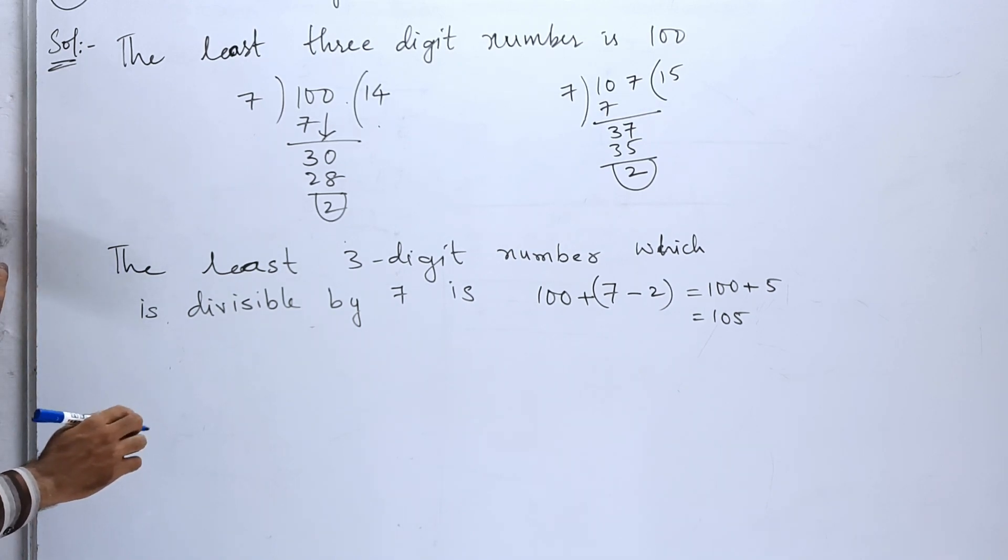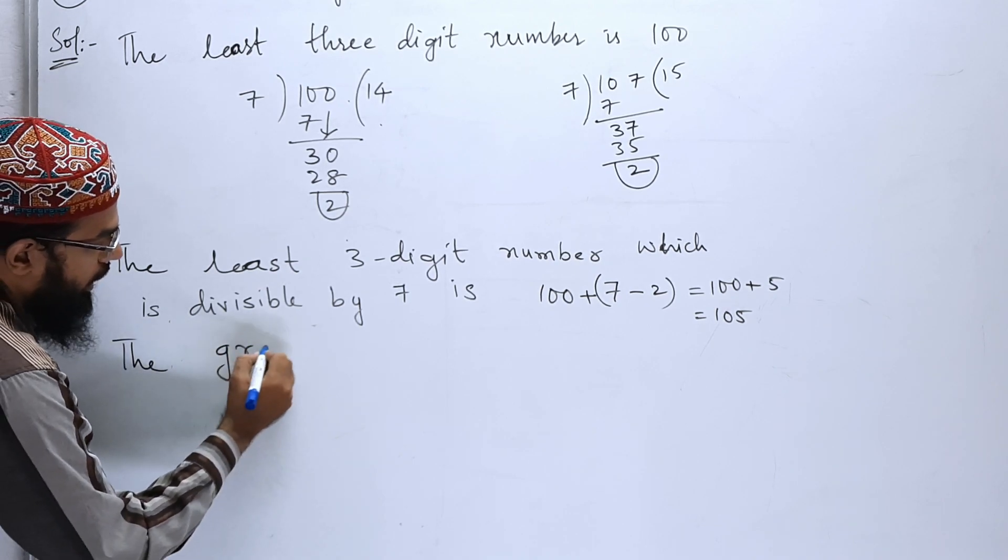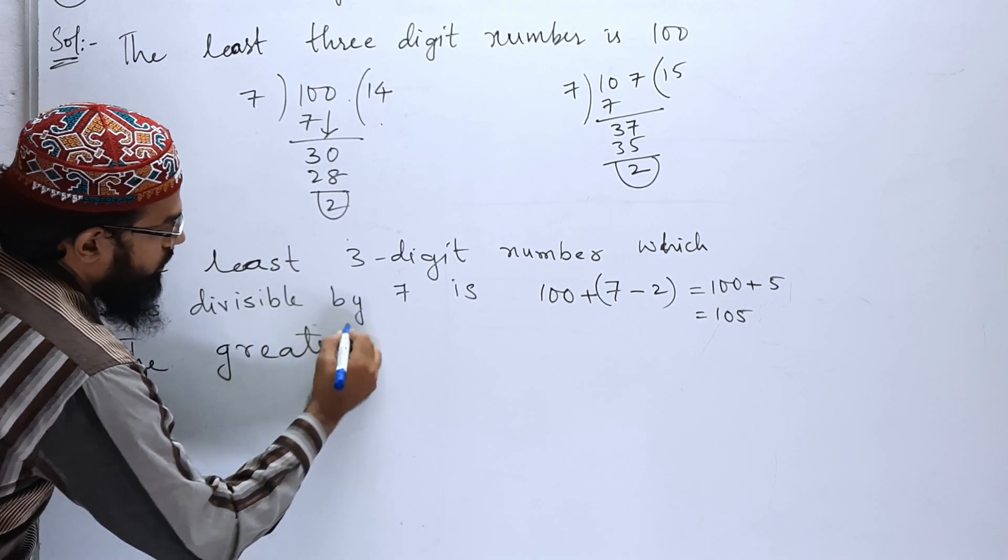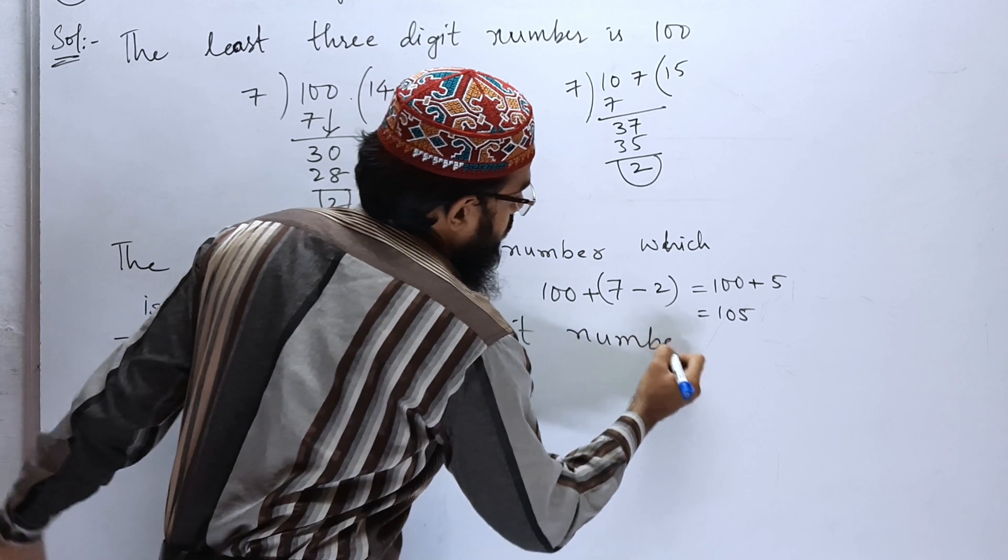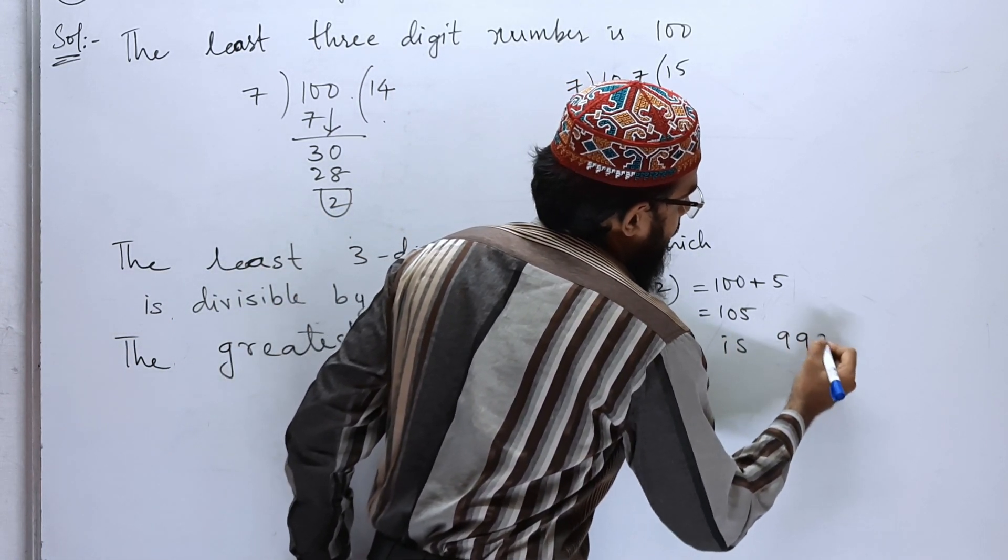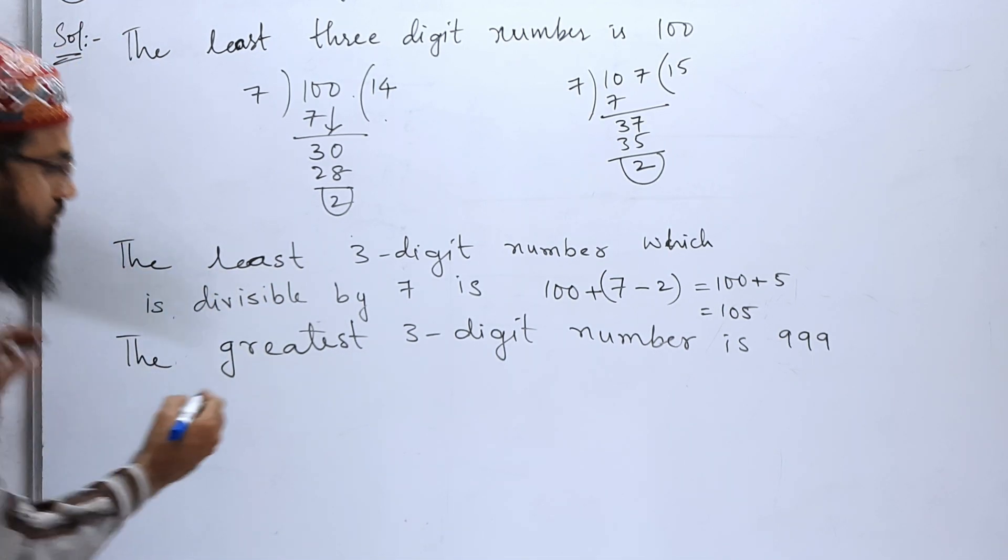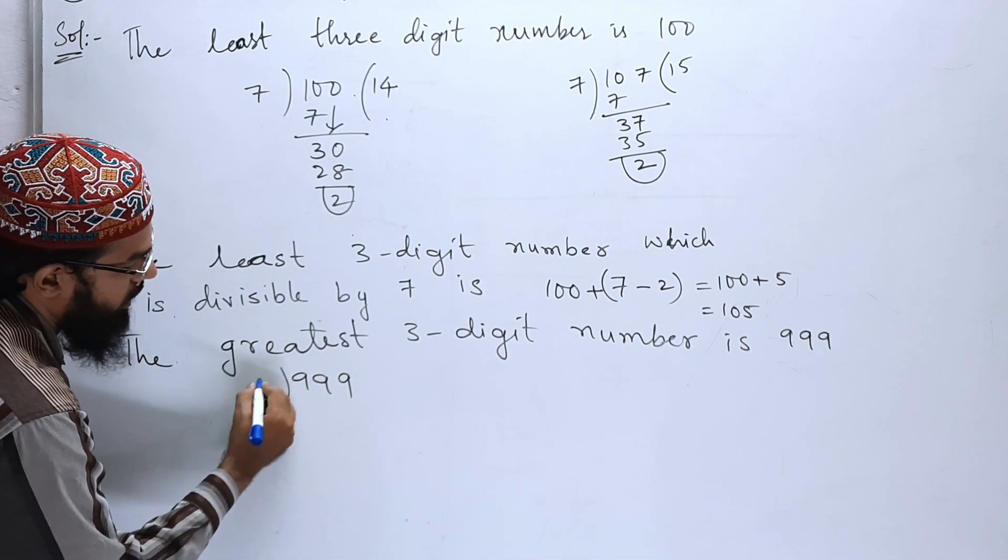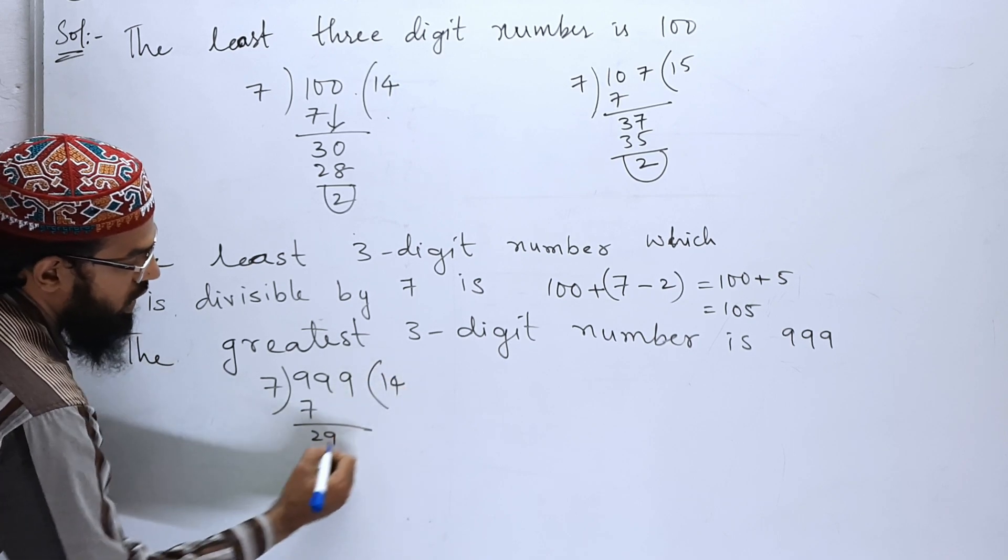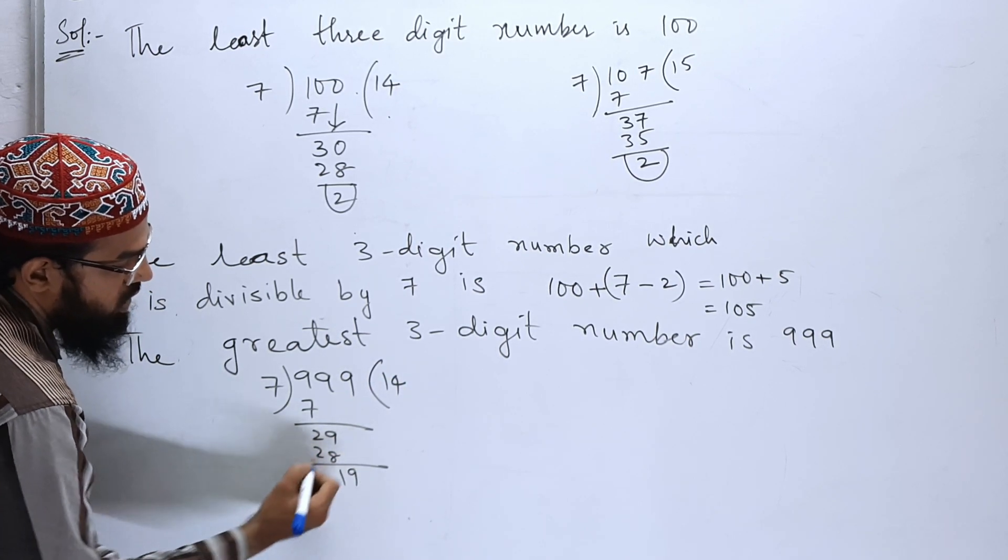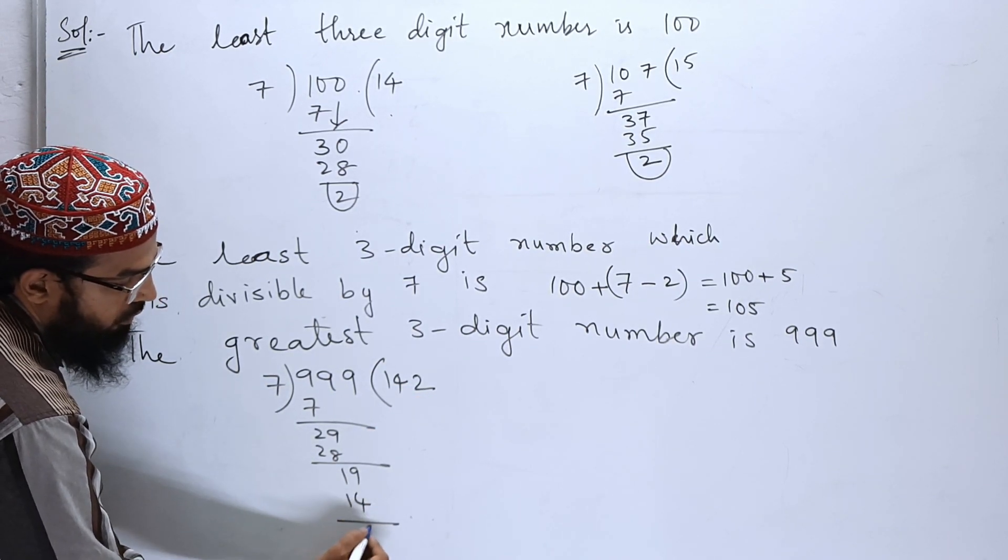Next, let us see for the greatest 3-digit number. The greatest 3-digit number is 999. Now let us divide this triple 9 with 7. So 999 divided by 7: 7 ones are 7, 2 left, 9 comes down, 7 fours are 28, 1 left, 9 comes down, 7 twos are 14. So the remainder is 5.